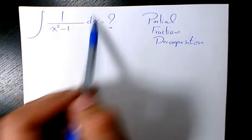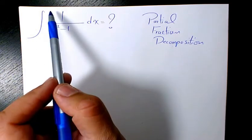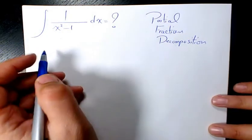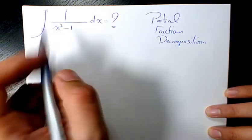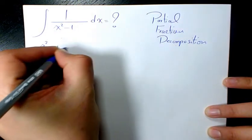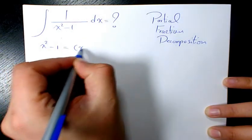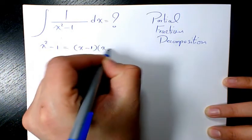As you see here, in this rational function, the degree of the numerator is 0 and the degree of the denominator is 2. So the first thing I want to do, I want to factor the denominator. x squared minus 1, when you factor it based on the difference of squares, you know it's going to be x minus 1 times x plus 1.